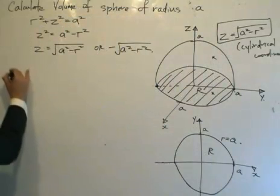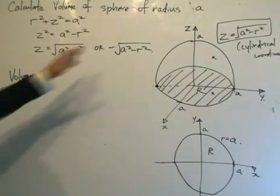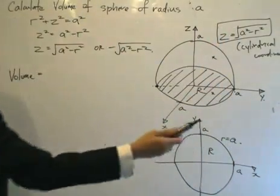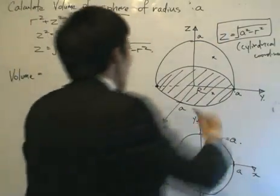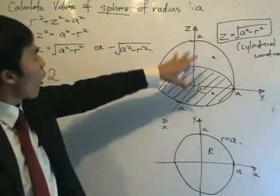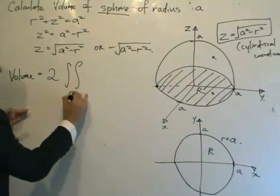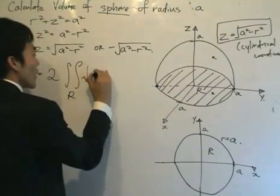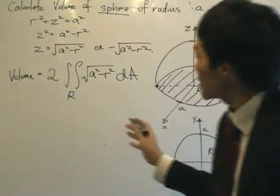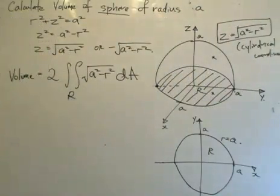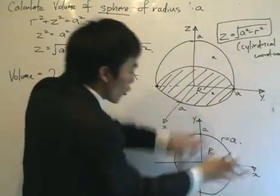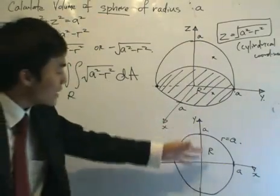Let's go straight to writing the double integral. If our surface is z equals the positive square root — the surface above the xy plane — by symmetry, the volume above the xy plane equals the volume below. So the total volume is two times the double integral over region R of the function square root of a squared minus r squared, dA. This diagram shows the sphere above the xy plane and the region R I want to find. I move the diagram to look straight down to define region R properly.